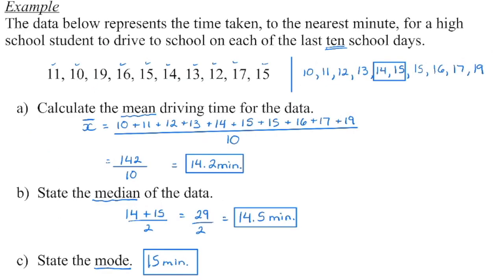These data values are a sample representing the time it takes a high school student to drive to school. The first thing we want to do is arrange the data in order from lowest to highest. As you go through, identify your smallest number and check it off once used, then your next smallest, and so on. Make sure the number of data values in your ordered list matches the original — if not, you might have missed one, which would make everything else incorrect.